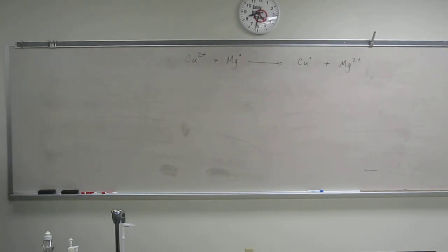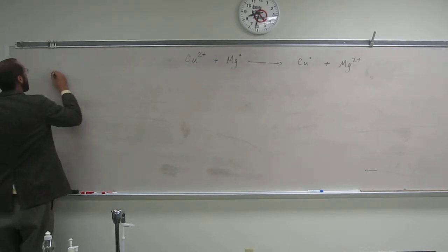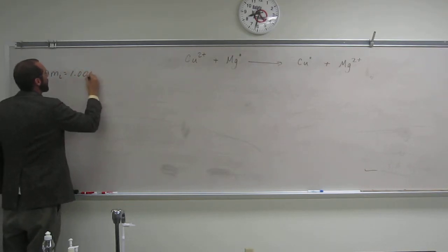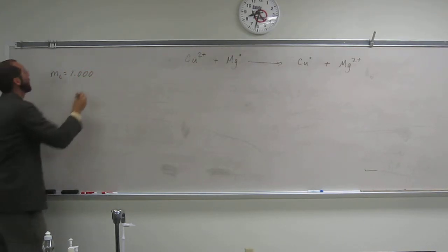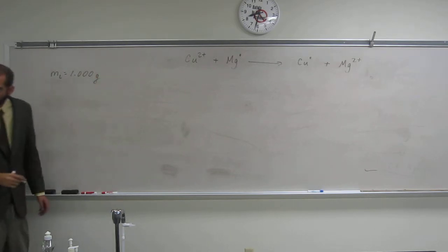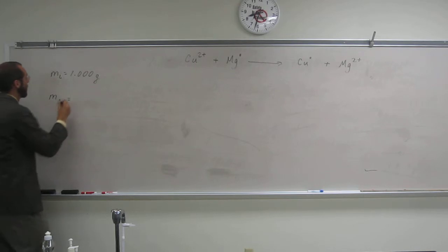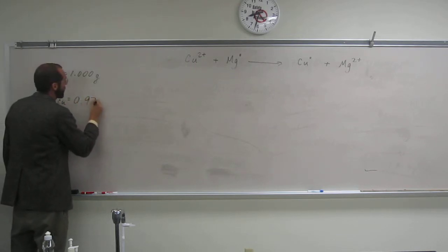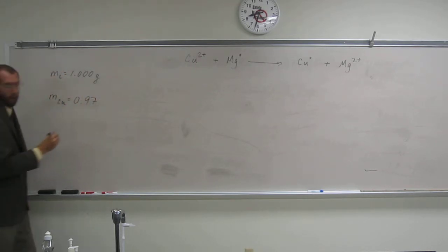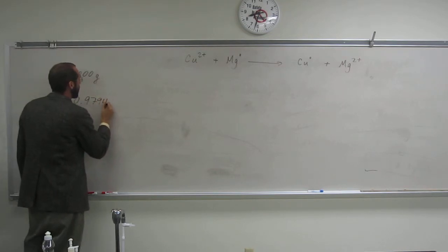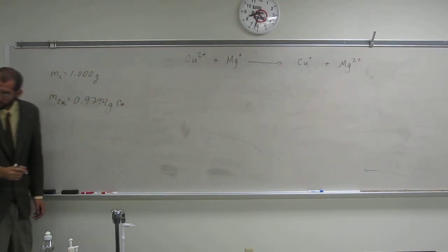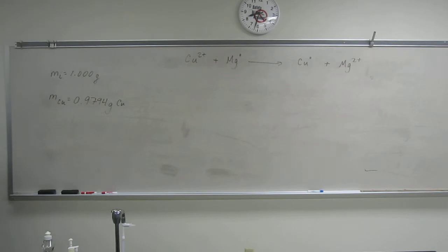Okay, so the mass initial is going to be 1.000 grams of the unknown copper compound. And it says that it isolates some sort of mass of copper. So 0.9794 grams of copper.